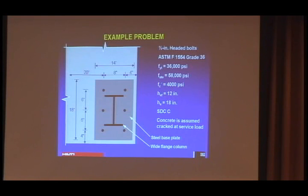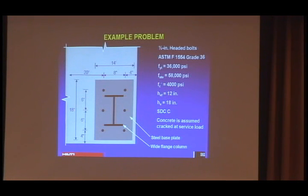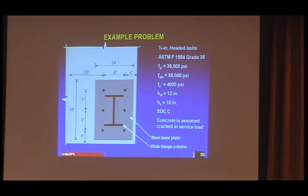The thickness of the concrete is 18 inches, so you have 18 inches of concrete physically and the anchor goes in 12 inches. The design category is C. Concrete is assumed cracked at service loads. As you can see in the picture, the shaded area is a base plate and the lighter color is concrete.